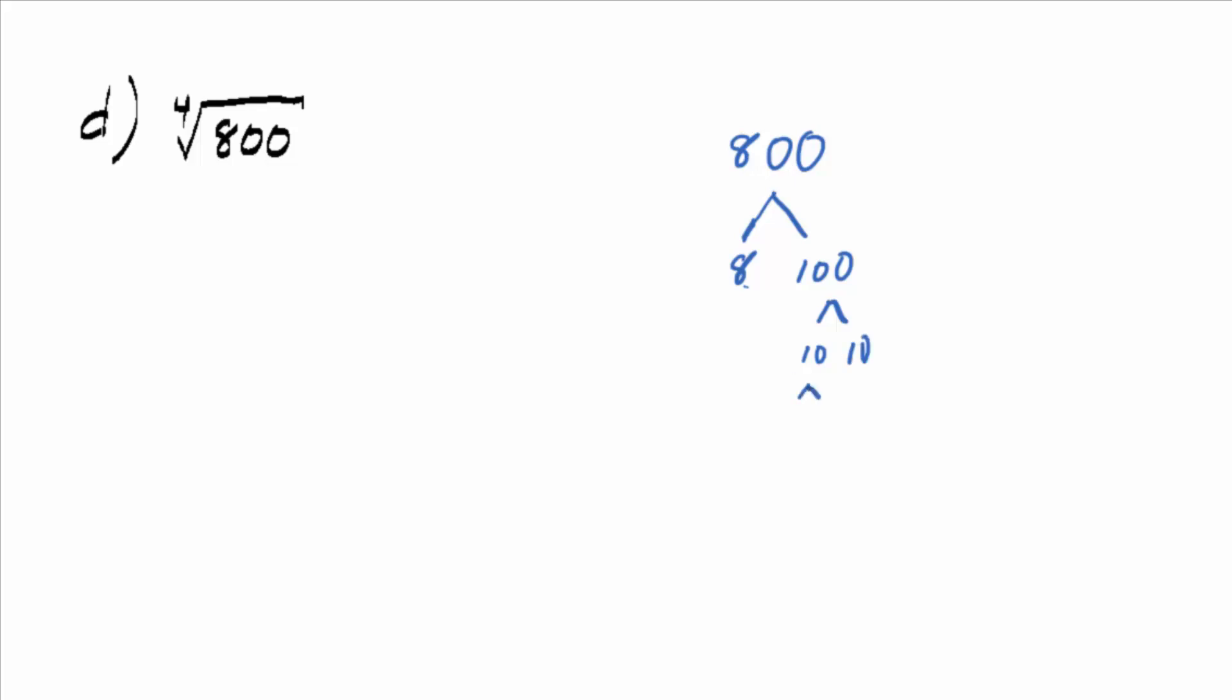10 and 10, and then 2 and 5, 2 and 5. And then 8 breaks down to 2, 4, and then another couple of 2s. So we've got how many 2s all together? 1, 2, 3, 4, 5. 2 to the 5th times what? A couple of 5s. So 5 squared. So then rewrite the 4th root of 800, rewrite the 800 as 2 to the 5th times 5 squared.